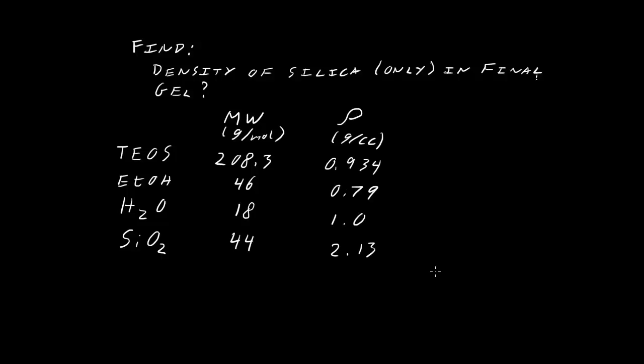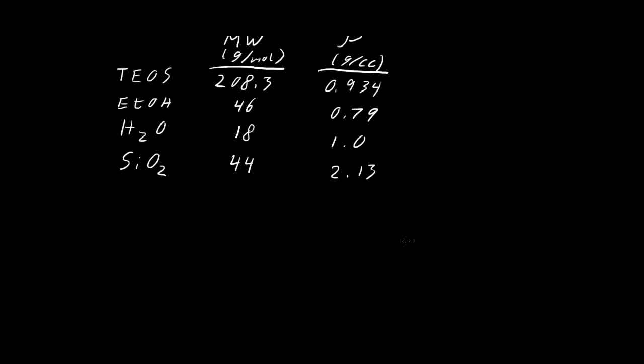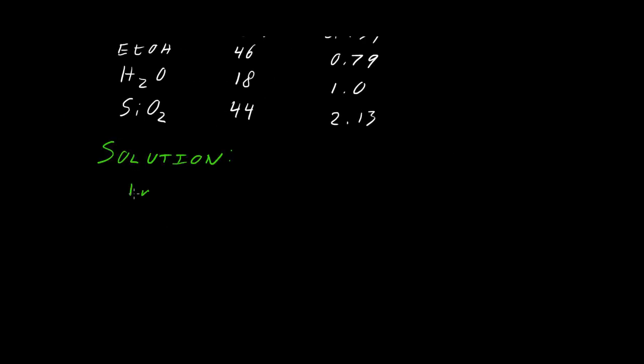We're going to need some material constants before we continue. For the TEOS, ethanol, water, and the final product silica, write down the molecular weights of each and the density of each in grams per cc. Just a reminder, cc, a cubic centimeter, is the same thing as a milliliter. I'll be using those kind of interchangeably, but they're the same volume.